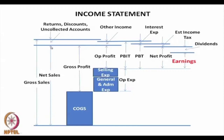From net sales, if we subtract cost of goods sold, we are left with gross profit. From the gross profit, if we subtract general and administrative expenses and selling expenses, which together constitute the operating expense, then what we get is the profit out of the operations, also known as operating profit.